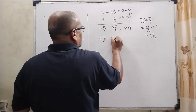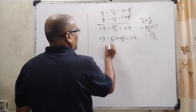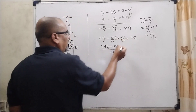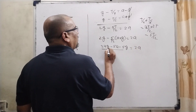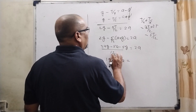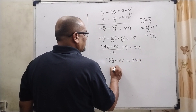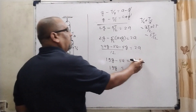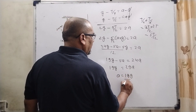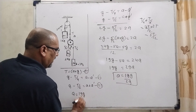Now substitute the value of T from the first equation. T equals A plus G. Substituting: taking LCM 12, we get 24G minus 5*(A plus G) equals 24A. That gives 24G minus 5G equals 24A plus 5A, so 19G equals 29A. Therefore A equals 19G/29. This is the value of A.